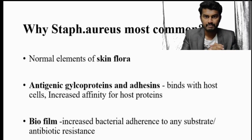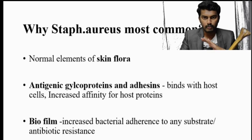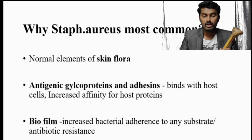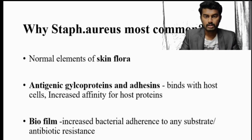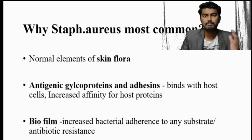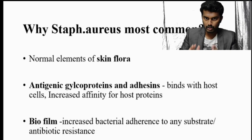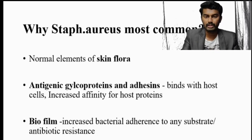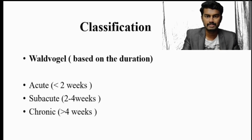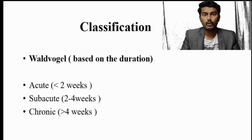Staphylococcus aureus is the most common organism affecting bones because it is the most common organism present on our skin, and it has an adhesin receptor that allows it to stick to bone. Once attached, it secretes a biofilm that protects the bacteria from antibiotics, allowing it to reside in and continually destroy the bone.